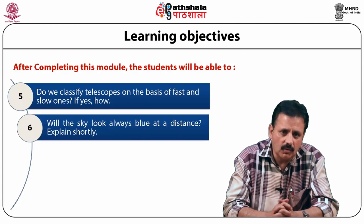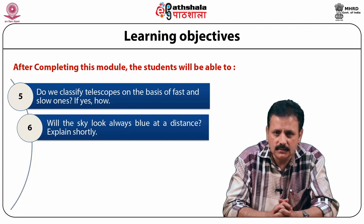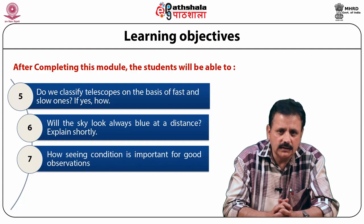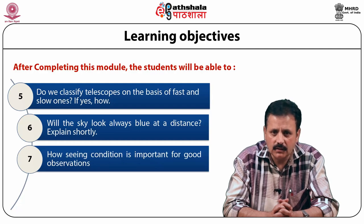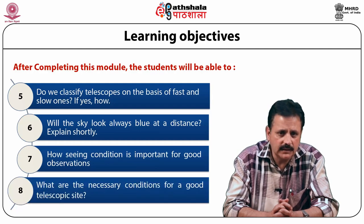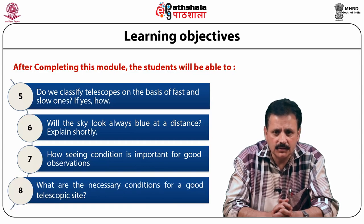To distinguish between the apparent field and true field, do we classify telescopes on the basis of fast and slow ones? If yes, then how can we do it? Will the sky always look blue at a distance? How? How are seeing conditions important for good observations? What are the necessary conditions for a good telescope site?